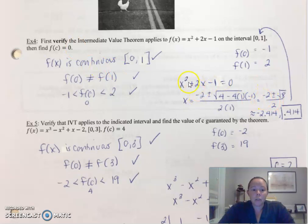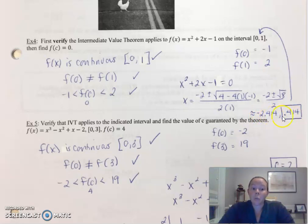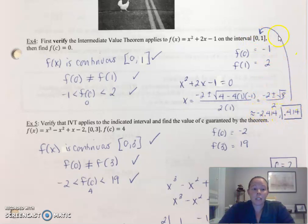Set this function equal to zero, solve it — just use the quadratic formula here, negative b and so forth — and you end up with negative 2.414 and 0.414. Notice I rounded three decimal places — always three decimal places. I don't care about both of these answers. I only want the answer that's within the interval, so just give me the number that's in the interval. There's my guaranteed at least one answer.